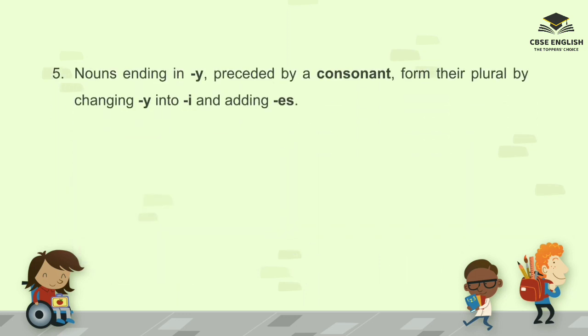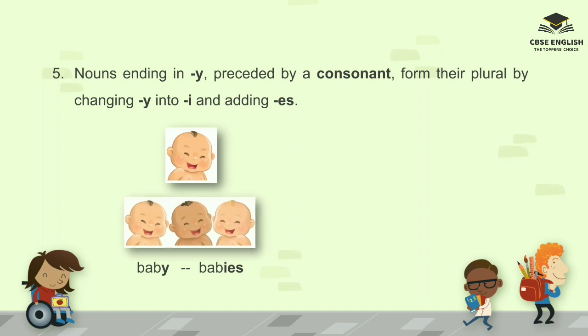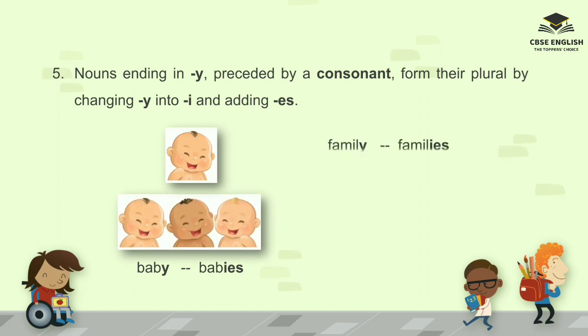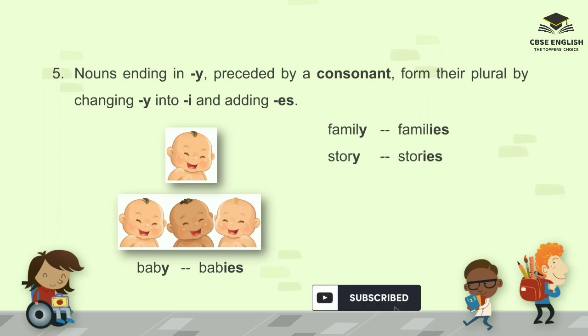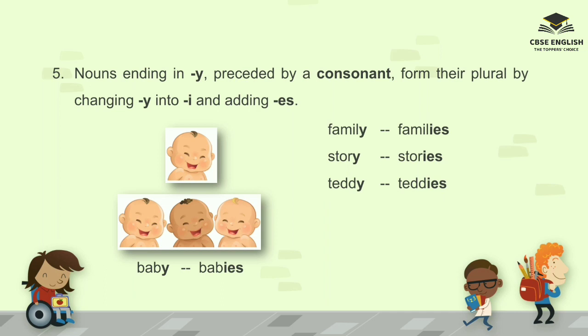Number five: nouns ending in Y preceded by a consonant form their plural by changing Y into I and adding ES. For example: baby, babies; family, families; story, stories; teddy, teddies; fairy, fairies; puppy, puppies; city, cities.